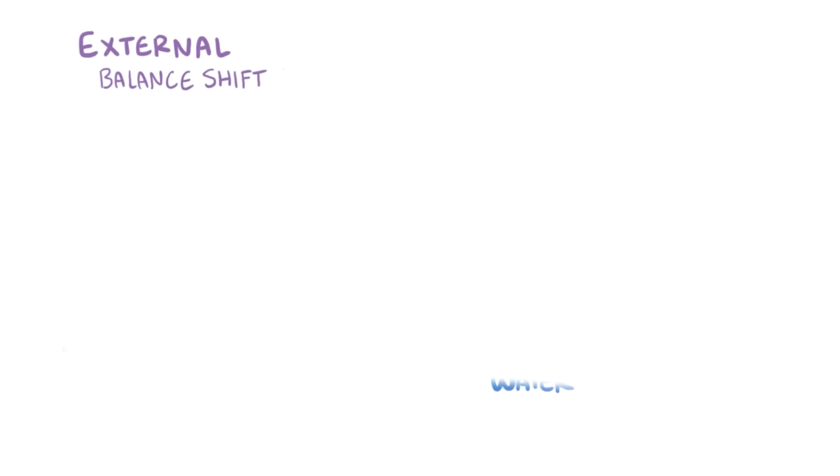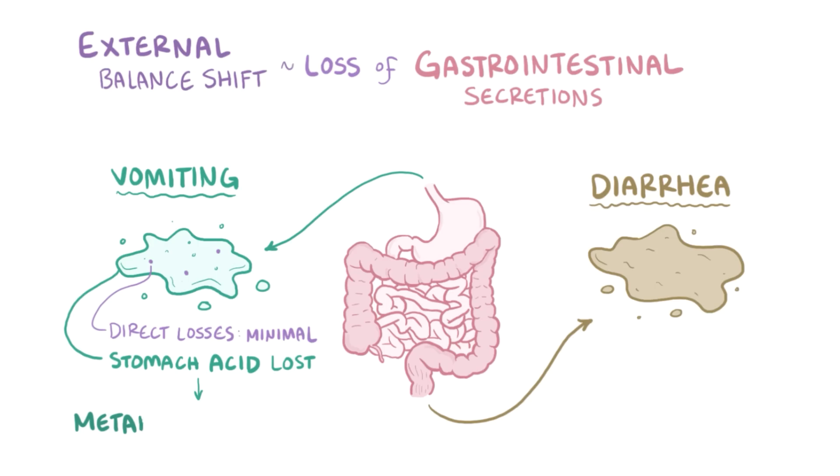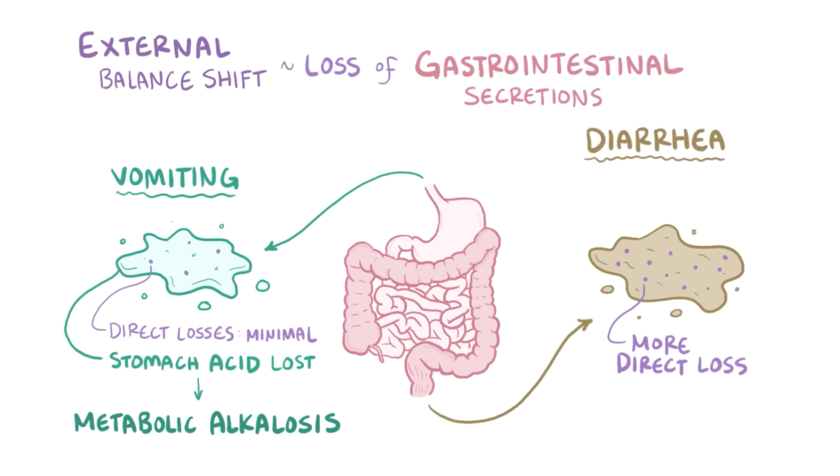Another external balance shift causing hypokalemia is increased losses of gastrointestinal secretions, typically due to vomiting and diarrhea. Now, the upper GI tract actually only secretes a small amount of potassium, so direct losses via vomiting are usually minimal, but the loss of stomach acid leads to metabolic alkalosis, which as we already saw can lead to hypokalemia. Relative to the upper GI tract, the lower GI tract secretes more potassium, so more gets directly lost in the feces in cases of chronic diarrhea, like from infections, inflammatory bowel diseases, as well as laxative abuse.